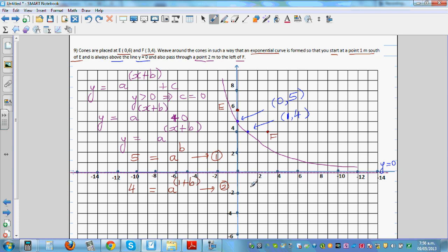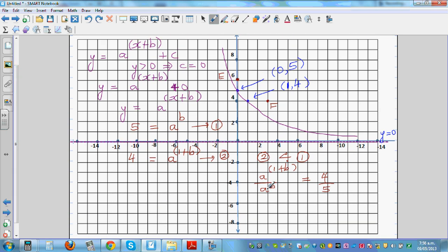So what can I do? Let me divide equation 2 by equation 1. So I can say a raised to 1 plus b divided by a raised to b is equal to... What is a raised to 1 plus b? a raised to 1 plus b is 4 and a raised to b is 5. So now using laws of indices, this is a raised to 1 plus b take away b is a raised to 1 or a is equal to 4 divided by 5 is 8 divided by 10 or you can use a calculator. So this is 0.8. Which implies your a is 0.8.